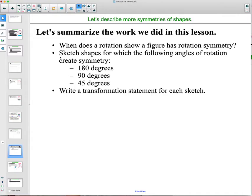So then summarizing what you would have done in this lesson. So when does a rotation show a figure has rotation symmetry? Remembering the two rotation degrees, it needs to be between 0 and 360, but it can't include 0. So you wouldn't say a 0 degree rotation and you wouldn't say a 360 degree rotation. It just needs to be in between those. So go ahead and try and sketch a shape for which the following angles of rotation create symmetry. So see if you can get one that has 180 degree rotation symmetry, 90 degree rotation symmetry, and 45 degree rotation symmetry. Then you can compare these with your classmates when you are back with them.